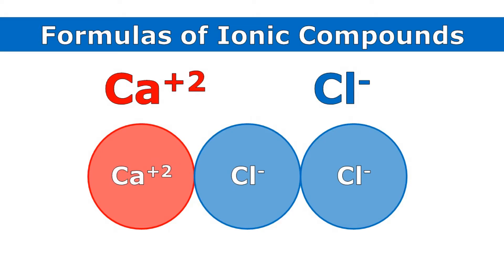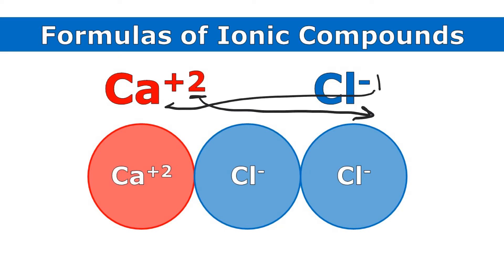Here I have a calcium ion with a plus two charge and a chloride ion that has a negative one charge. Remember, if you don't see a number, it means it's one. So it takes two of those chloride ions to cancel out the plus two charge. There's a really quick way to figure out what the formula should be using what we call the crisscross method. I needed two chloride ions but only one calcium ion — I can take the charge of one and use it as the subscript of the other. I can crisscross the charges.